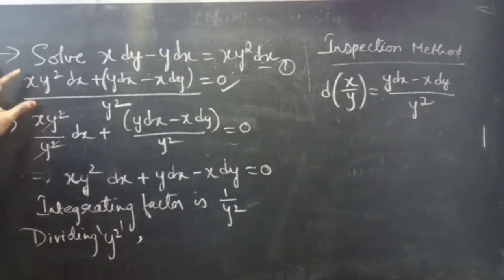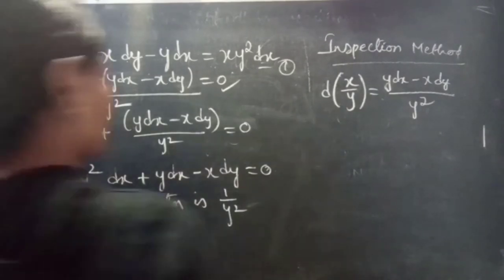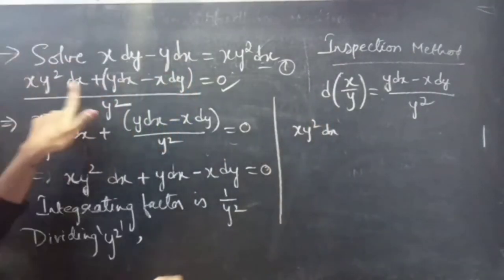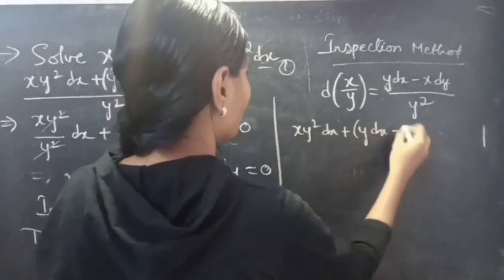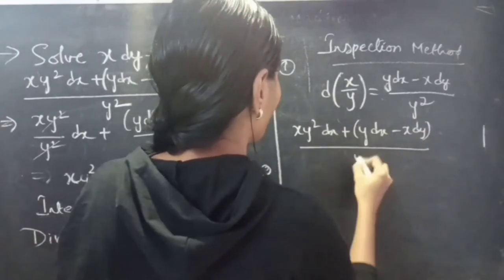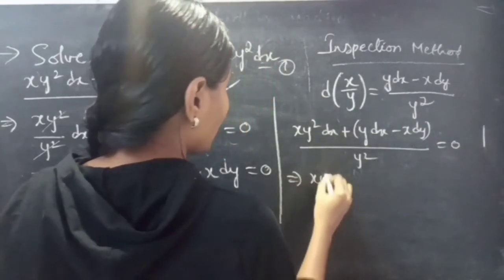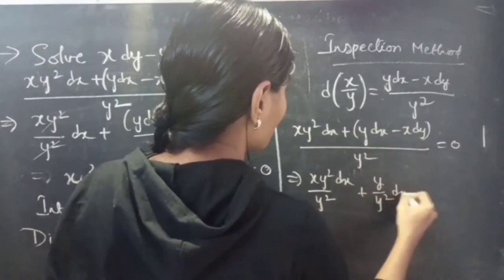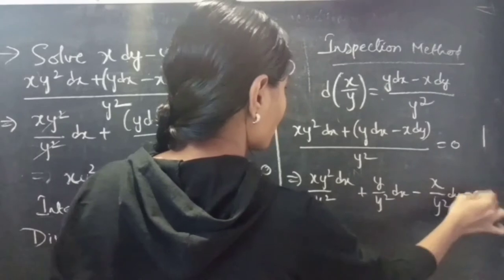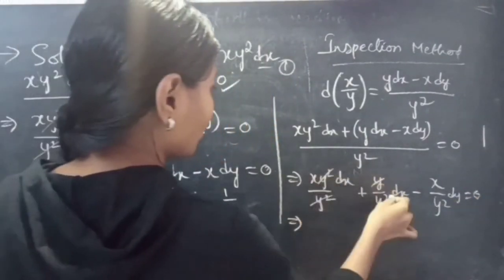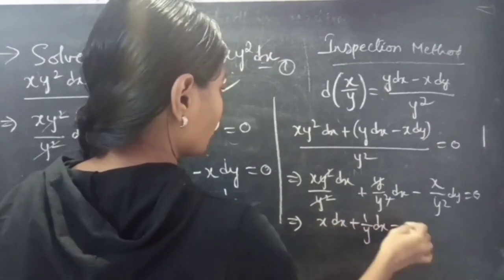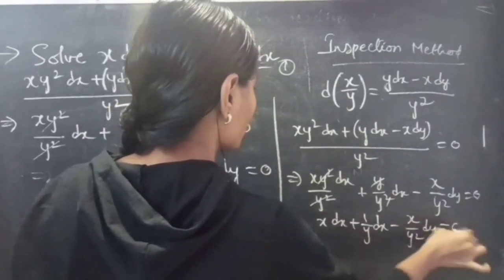We need to check whether this reduced equation is an exact equation. We have x y squared dx plus y dx minus x dy, all divided by y squared, equals to 0. Expanding: x y squared dx / y squared plus y dx / y squared minus x dy / y squared equals to 0, which simplifies to x dx plus (1/y) dx minus (x/y²) dy equals to 0.